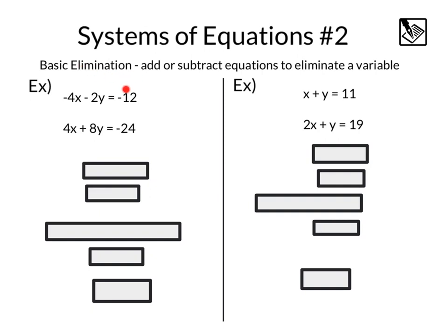Now a basic elimination is when you add or subtract equations to eliminate a variable. In this example, we've got negative 4x minus 2y equals negative 12, 4x plus 8y equals negative 24. And since everything is equal here, we can actually add these equations together.